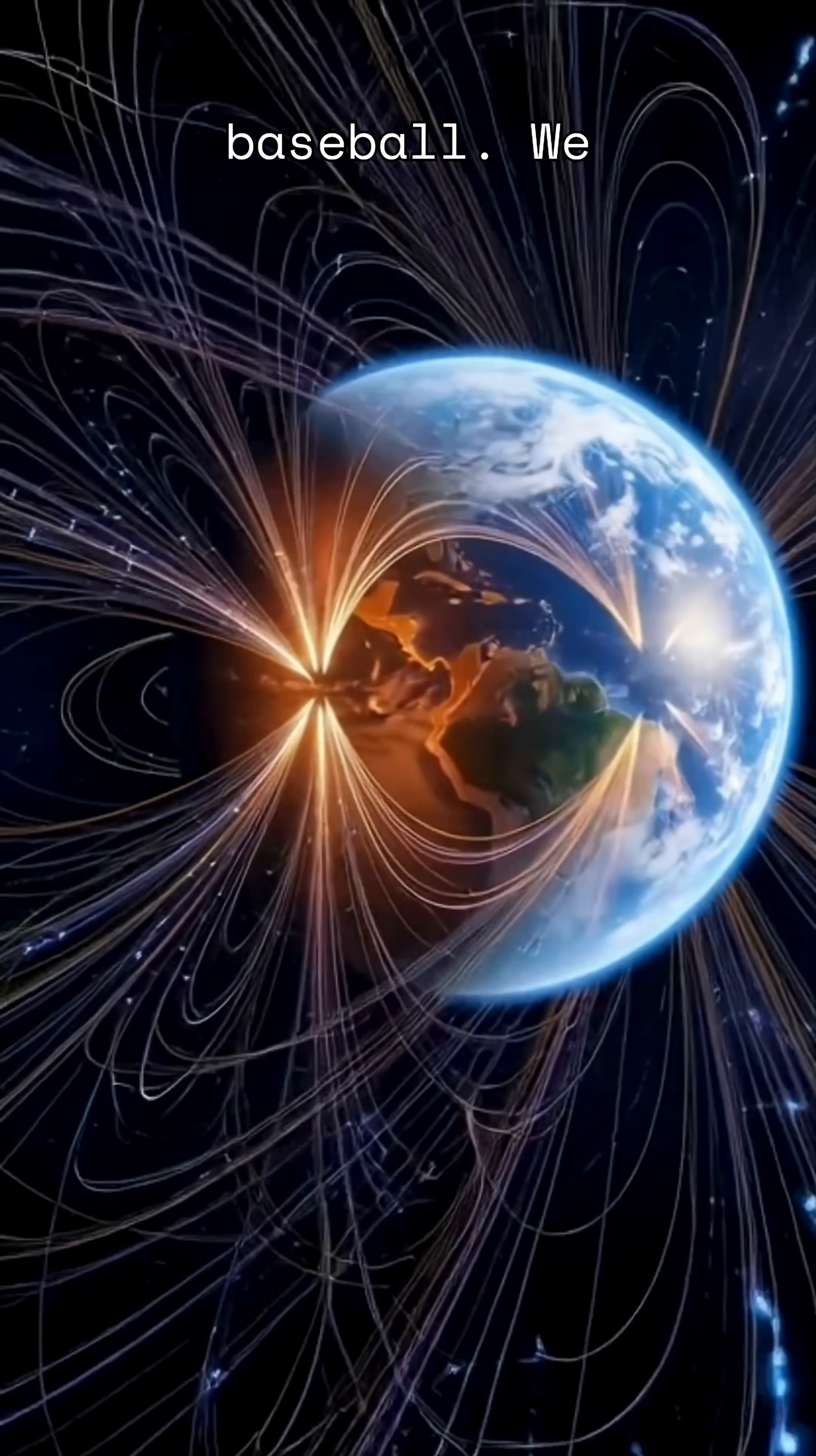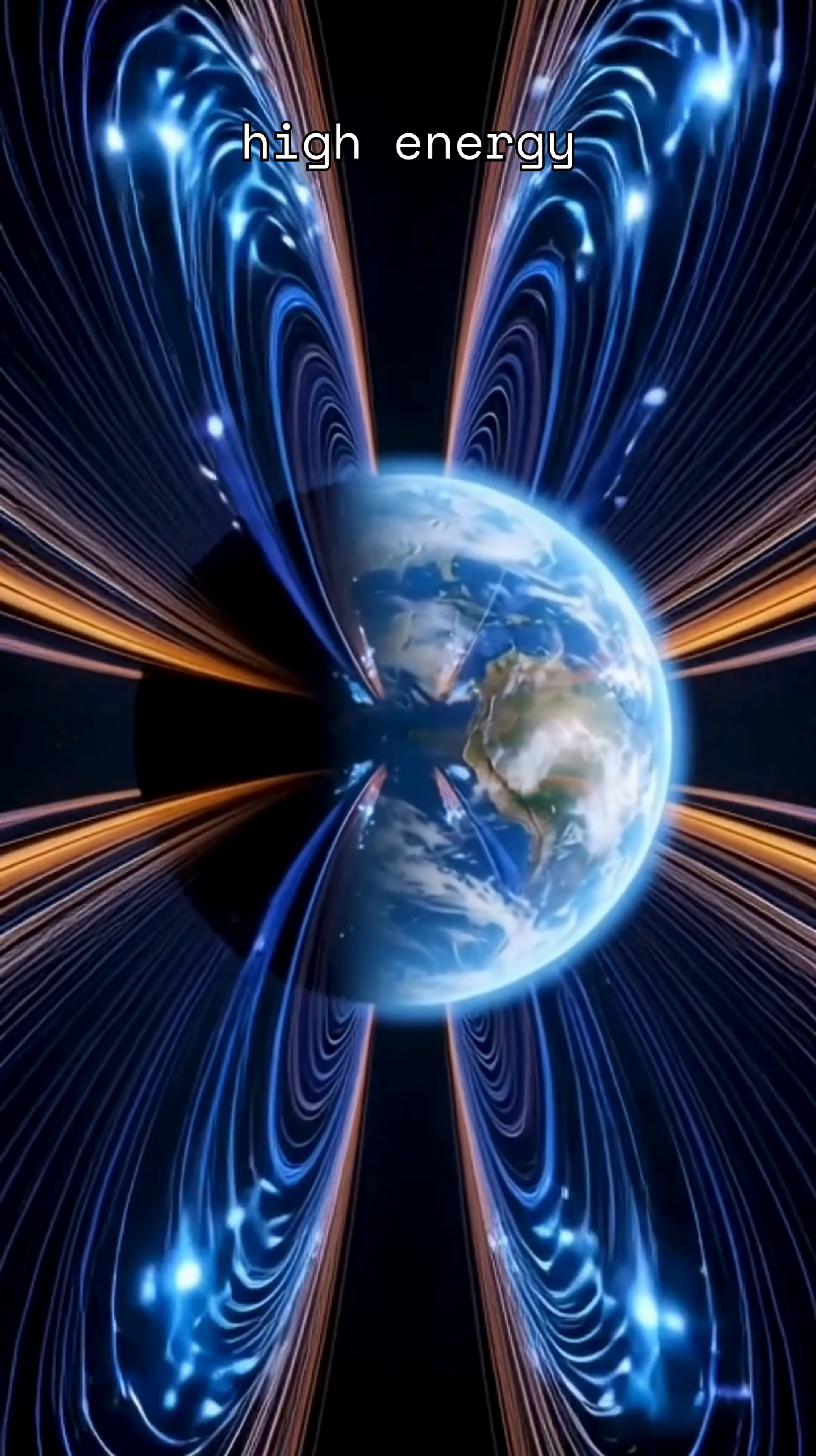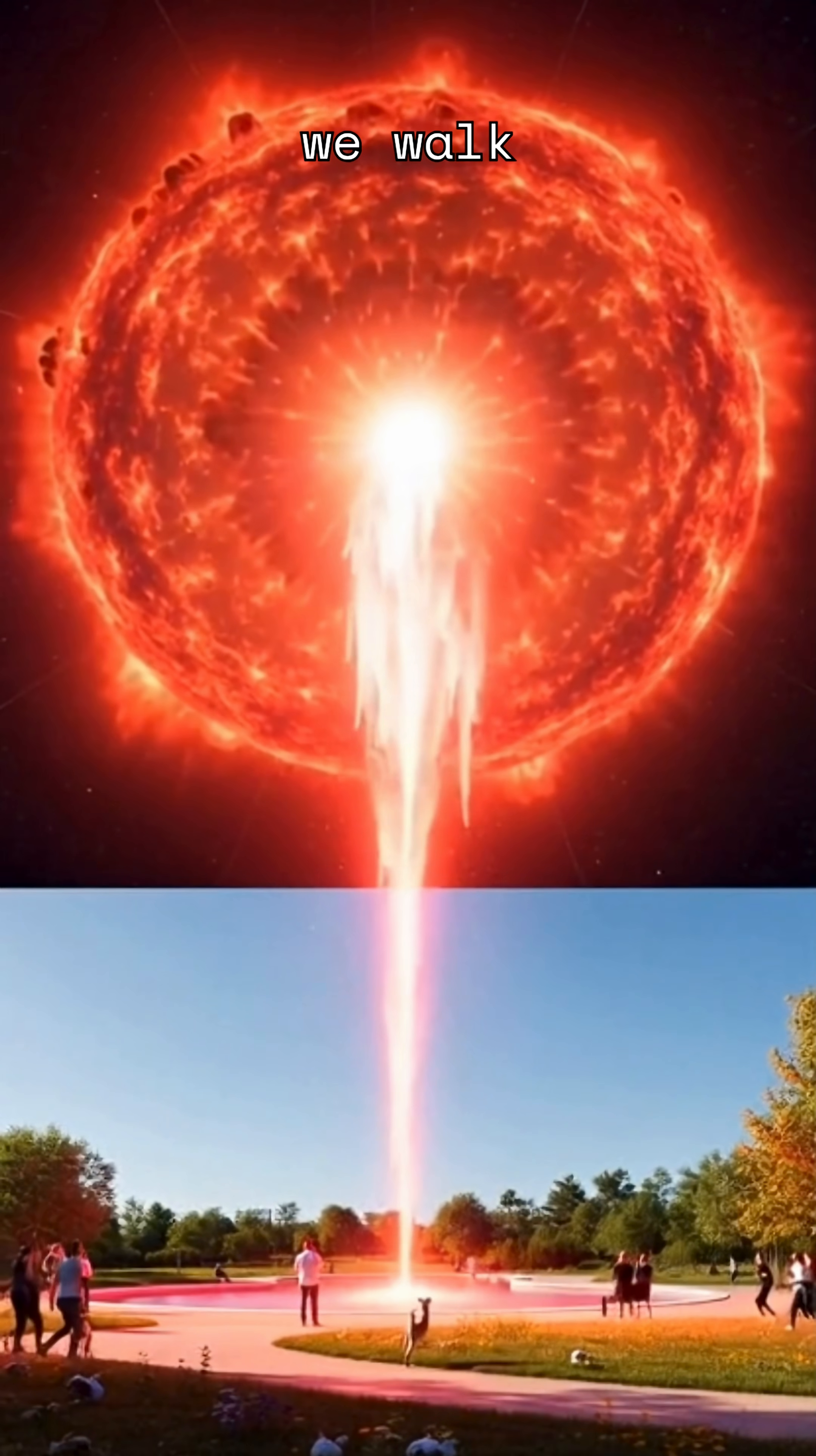We don't feel them because Earth has two incredible protectors. Our magnetic field, an invisible force field, which deflects most of these high-energy particles, and our atmosphere, which acts like a bulletproof vest, breaking down the rest into harmless secondary particles, a cosmic rain we walk through daily.